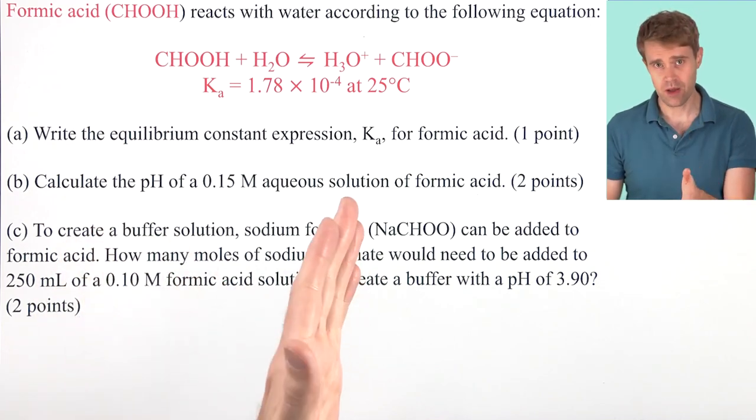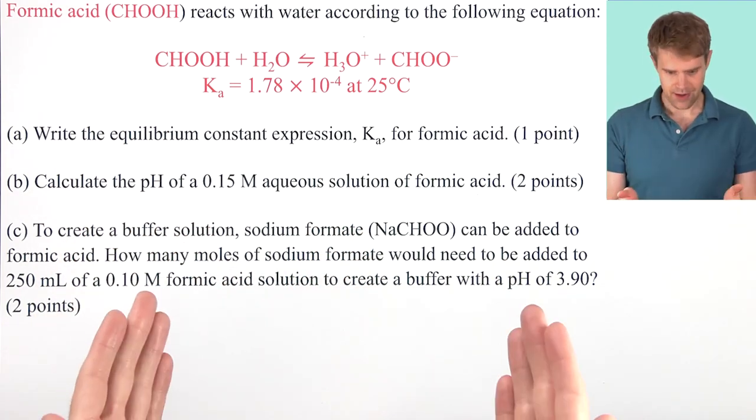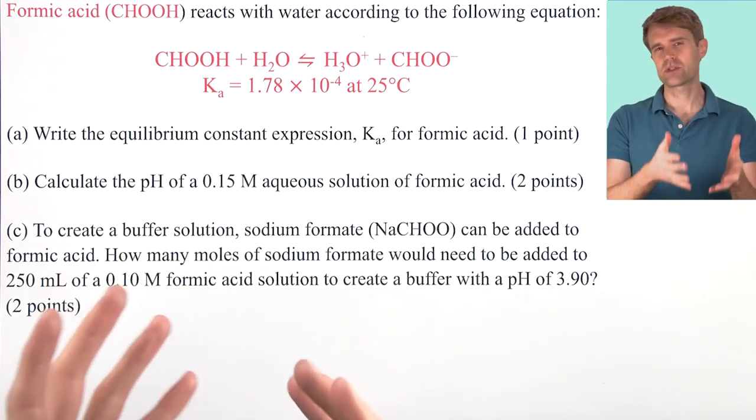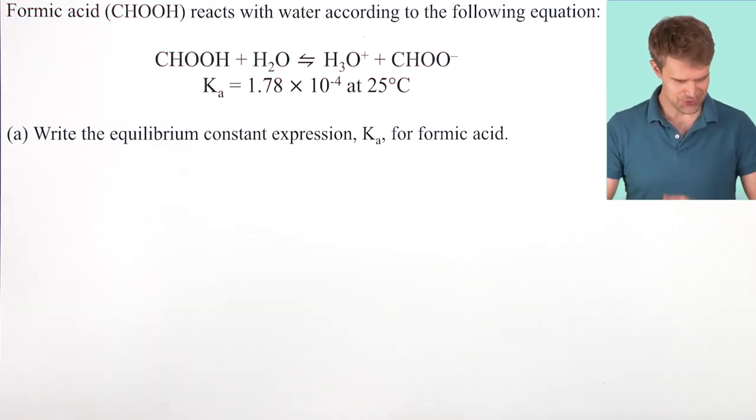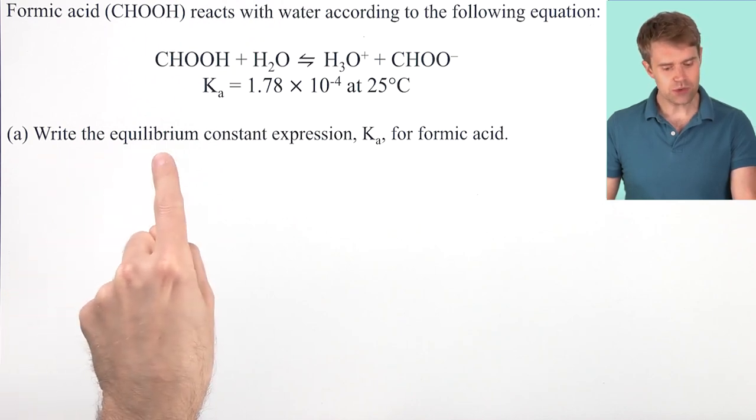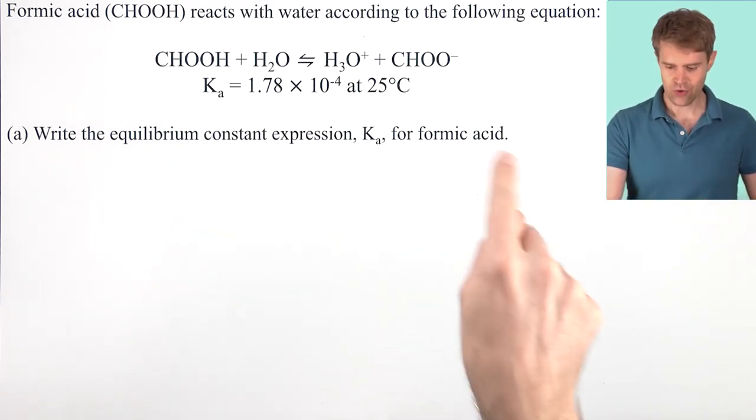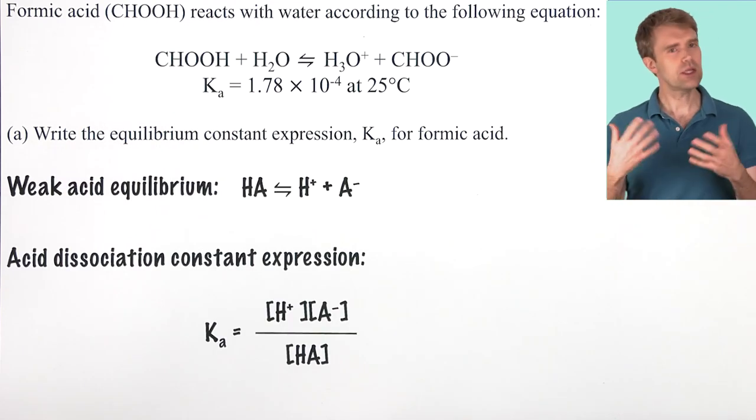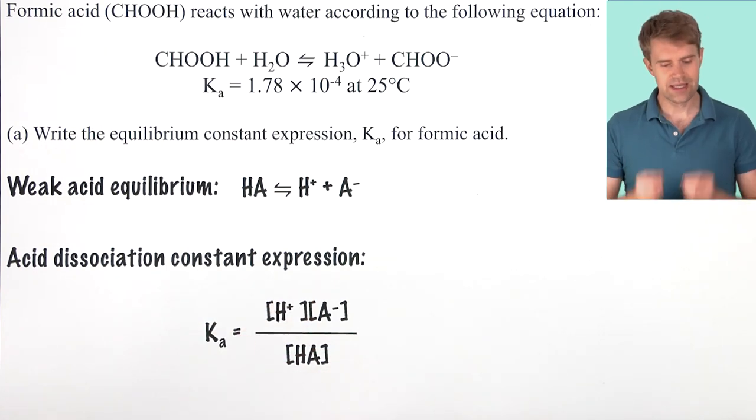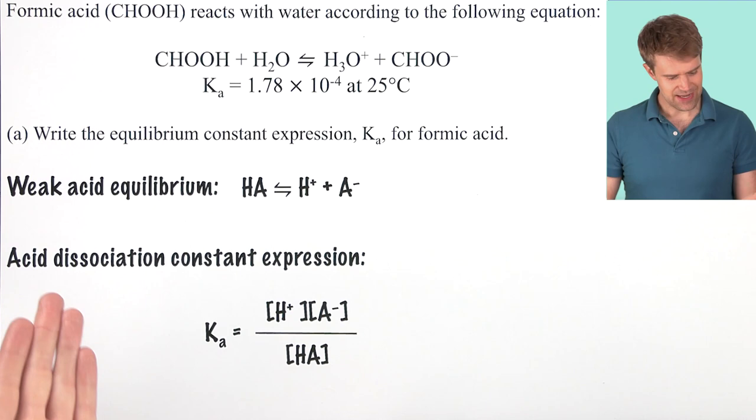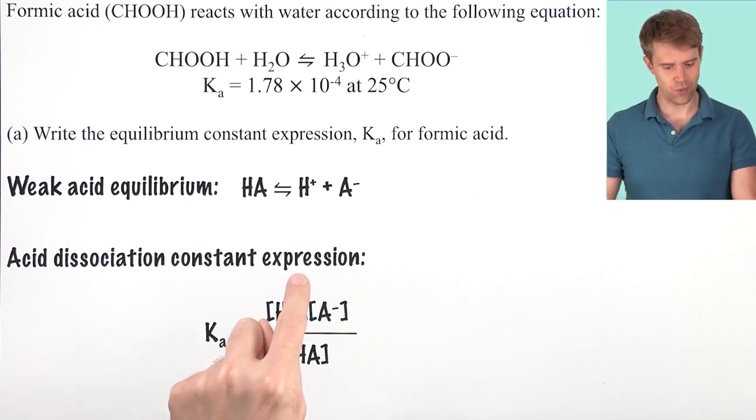We'll go through them one at a time. But before we start, remember that different parts of the AP free response question sometimes depend on each other. So we'll start here with part A. Write the equilibrium constant expression Ka for formic acid. Equilibrium is a super common topic on the free response section. So many questions begin by asking you to write the equilibrium expression K. For weak acid, like formic acid here, K is the acid dissociation constant expression or Ka.